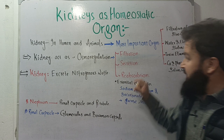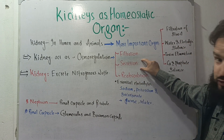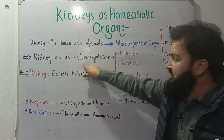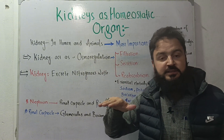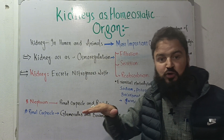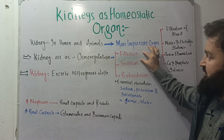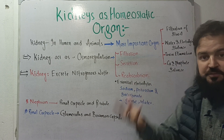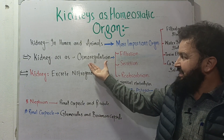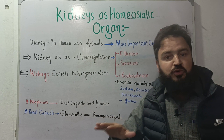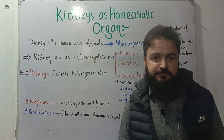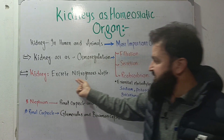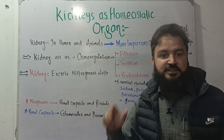To summarize the kidney processes: filtration, secretion, excretion, and reabsorption. In the context of osmoregulation, the kidney performs filtration, secretion, and reabsorption. The kidney also excretes nitrogenous waste from the body.